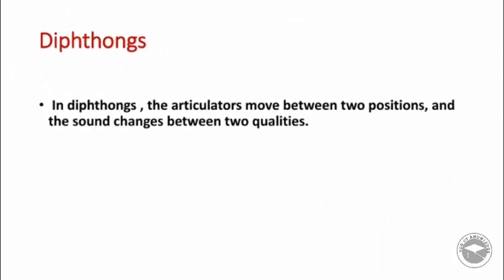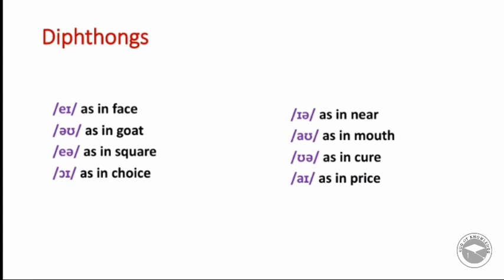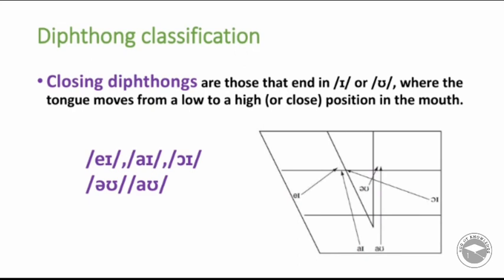In diphthongs, the articulators move between two positions and the sound changes between two qualities. In diphthongs we have movement from one sound to another — for example: /eɪ/ as in face, /əʊ/ as in goat, /eə/ as in square, /ɔɪ/ as in choice, /ɪə/ as in near, /aʊ/ as in mouth, /ʊə/ as in cure, and /aɪ/ as in price.